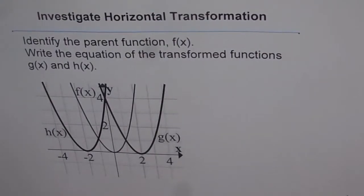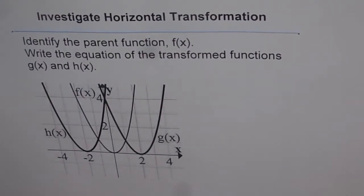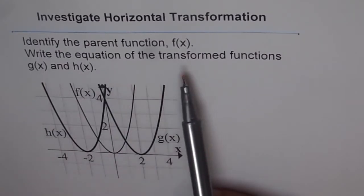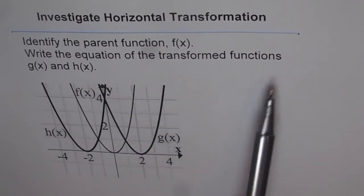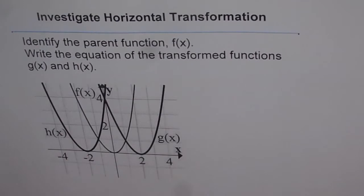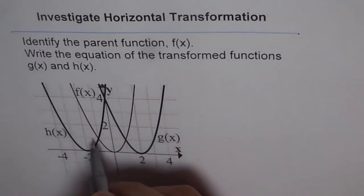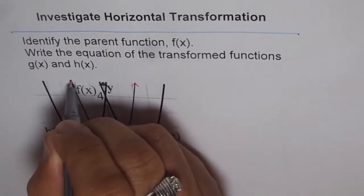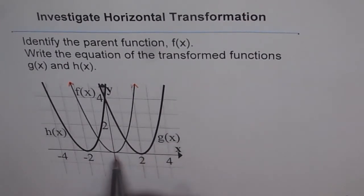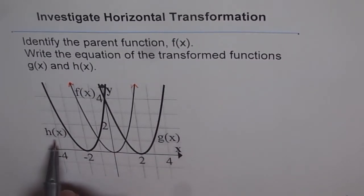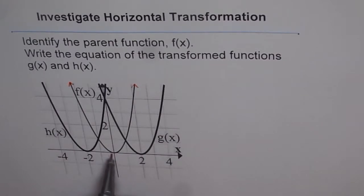Let's investigate horizontal transformation, identify the parent function f(x), and write the equations of the transformed functions g(x) and h(x). We have a graph showing three functions: f(x) is the parent parabola, the quadratic function x squared. g(x) is translated two units to the right, and h(x) is shifted two units to the left.